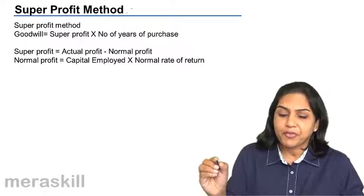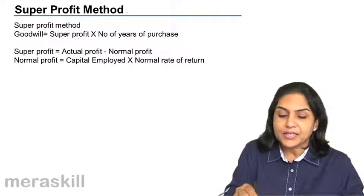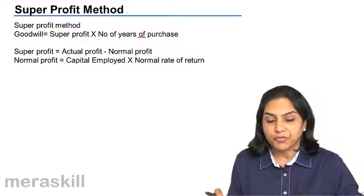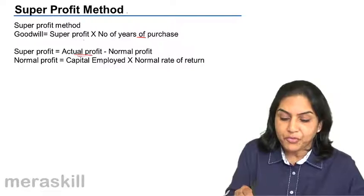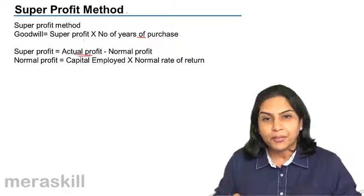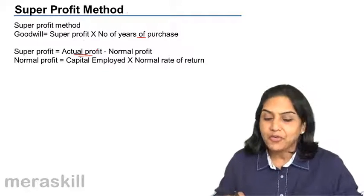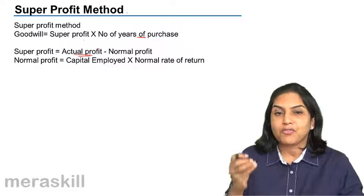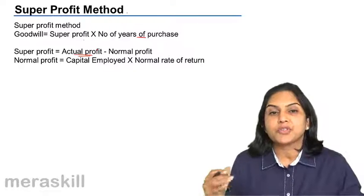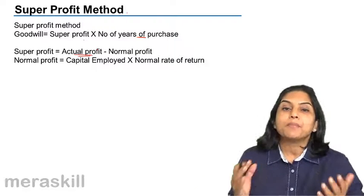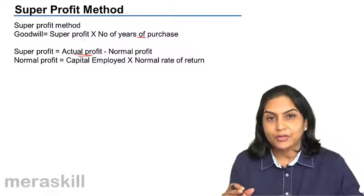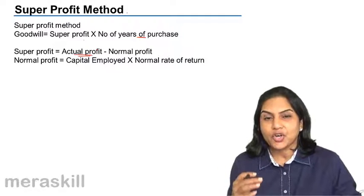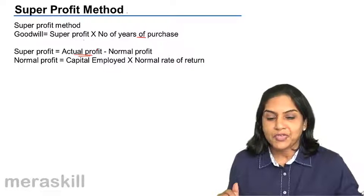So that is the super profit method, where goodwill is super profit multiplied by the number of years of purchase of goodwill. Super profit is the actual profit which the business makes over the normal profit in the same kind of business. So normally if I expect a normal rate of return of 10% but my business generates profits equal to 25%, only then that business should be said to have goodwill. Goodwill in this method is based on the extra profits — the super normal profits that are made.